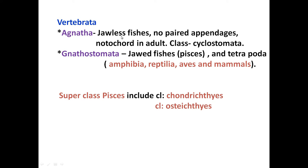Agnatha includes jawless fishes. Jawless fishes are aquatic, and the notochord persists in the adult. They have no paired appendages, and it has only one class, namely Cyclostomata. The second division is Gnathostomata, which is divided into two superclasses: Pisces (the jawed fishes) and Tetrapoda. Tetrapoda is again classified into four classes: Amphibia, Reptilia, Aves, and Mammalia. Superclass Pisces is classified into Class Chondrichthyes, comprising cartilaginous fishes, and Osteichthyes, comprising bony fishes.